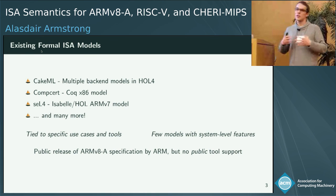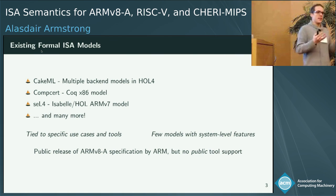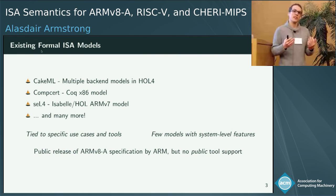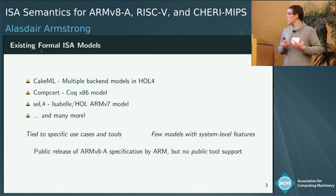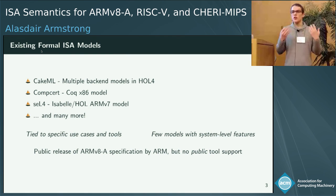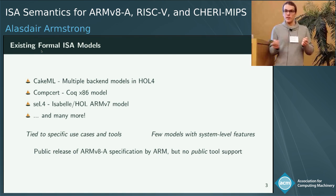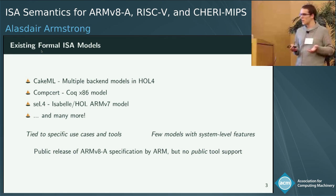Compiler writers might only be interested in specifying the subset of the ISA their compiler actually uses. Looking at an actual ISA, it contains lots of instructions the average C compiler just wouldn't generate. Also, some of these models lack system-level features — things like virtual memory, address translation, and hypervisor mode — which are used by operating systems. If you're specifying an ISA for a compiler, you're probably not going to formalize the hypervisor mode of the processor.